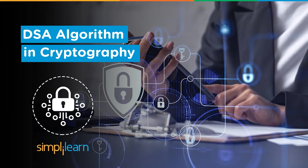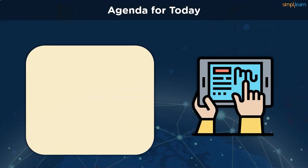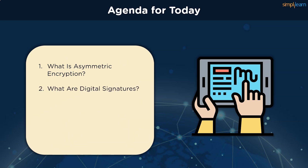Let's take a look at the topics we need to cover in today's video. We first get a recap on what asymmetric encryption is and how it is different from symmetric encryption. We learn what digital signatures are and how they are used in today's world. Next, we understand the digital signature algorithm and see how it works step by step. Finally, we learn about the advantages DSA provides when it comes to managing digital signatures in a corporate and personal environment.